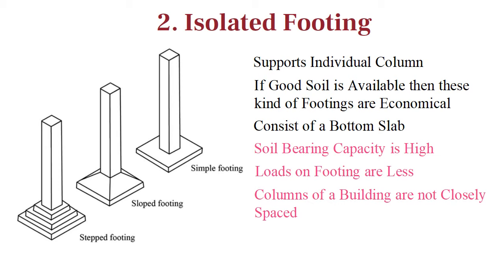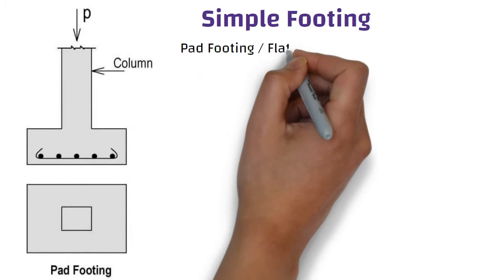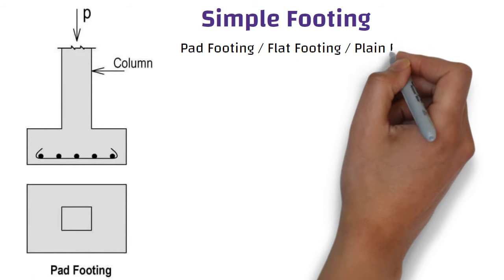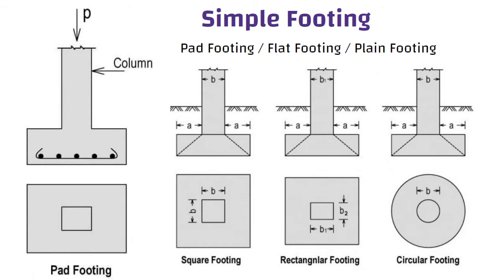Isolated footings can be of three types: simple footing, sloped footing, and stepped footing. Simple footing is also called pad footing, flat footing, or plain footing. You can see in these pictures — these kind of footings can be square, rectangular, or circular in shape, which are provided under each column independently.